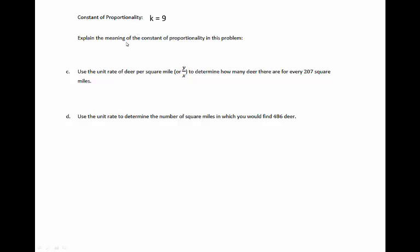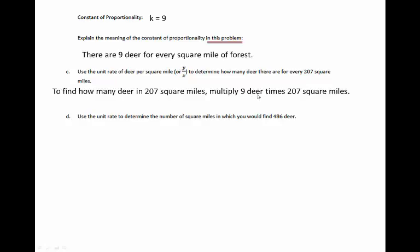If I want to explain the meaning of the constant of proportionality in this particular problem, I can say that 9 means there are 9 deer for every one square mile of forest. If we want to use the unit rate of deer per square mile, or y divided by x, to determine how many deer there are for 207 square miles, we're going to multiply 9 deer times 207 square miles. There are 9 deer for 1 square mile, so each of those 207 square miles would have 9 deer — that's why we multiply. We would get 1,863 deer in 207 square miles of forest.